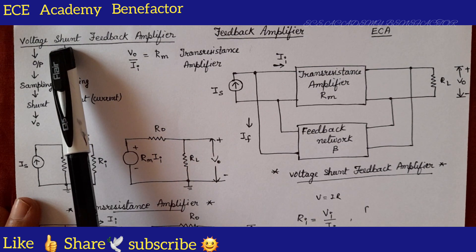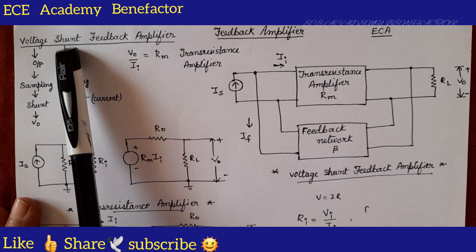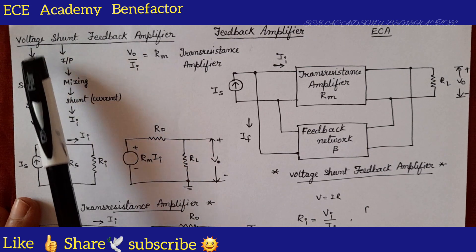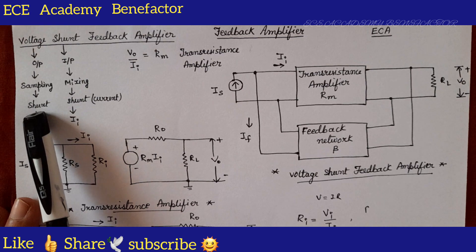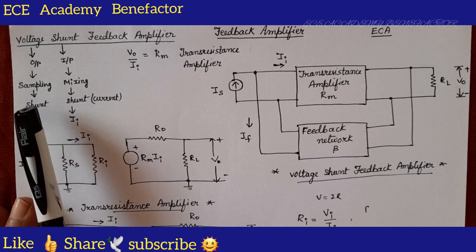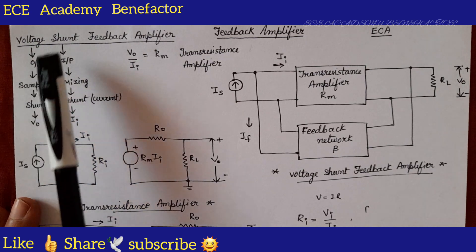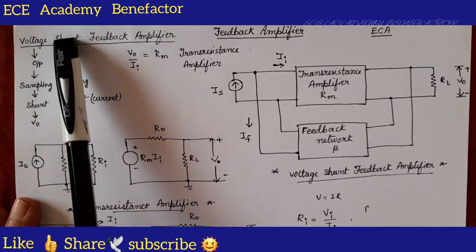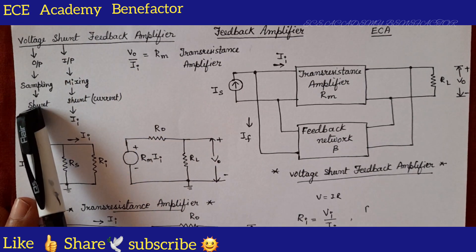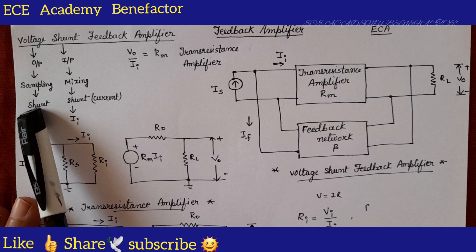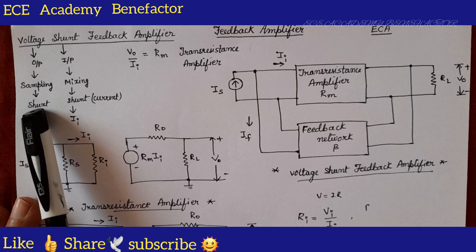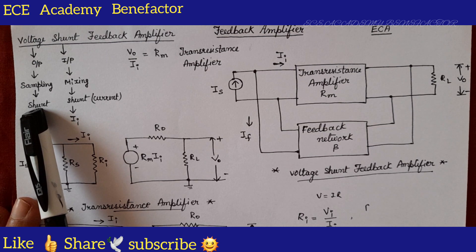What are the connections at the input side? Shunt connections. At the output side? Also shunt connections. So at both output and input, we have shunt connections. The feedback network is to be connected in shunt, that is in parallel, to the basic amplifier.